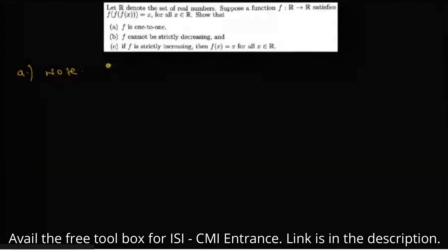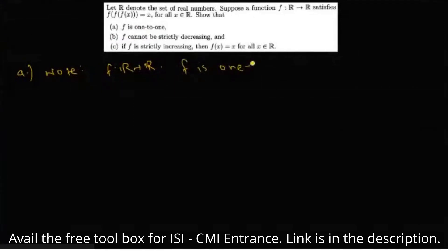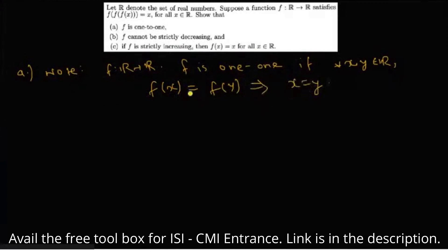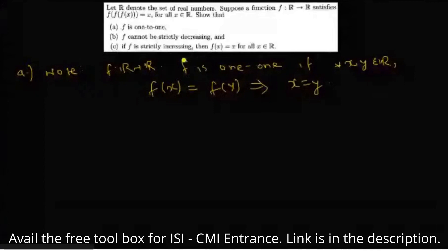Note: F maps from R to R. F is one-one if for every x, y belonging to R, F(x) = F(y) implies x = y. If this condition holds, then we can say that this function is one-one.